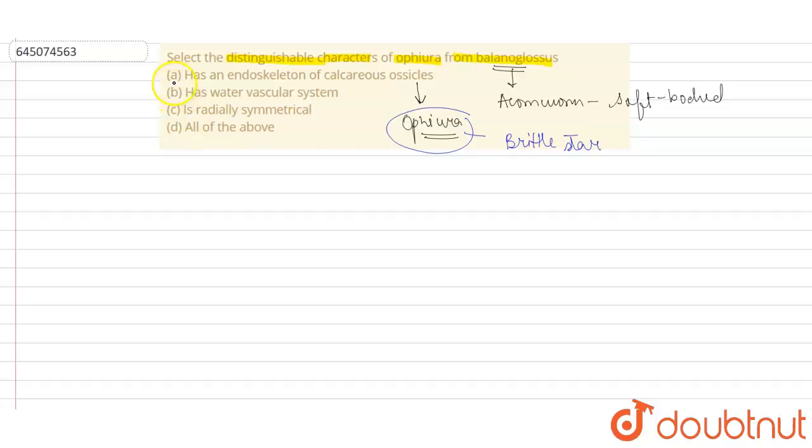Second has water vascular system. So there is presence of water vascular system in Balanoglossus as well, but there are some minor peculiarities which basically differentiate the water vascular system of Ophiura from that of Balanoglossus. So yes, this is also correct.